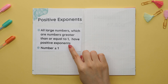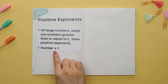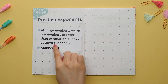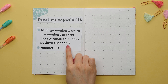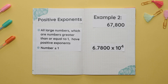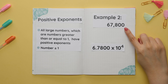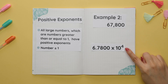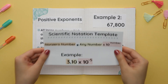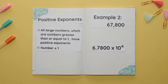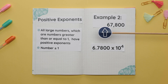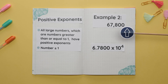All large numbers, which are numbers greater than or equal to one, will have positive exponents when you are converting them to scientific notation. For example two, we'll convert this number from standard notation to scientific notation. Again we will use our general template. We would first find the decimal place. For numbers greater than or equal to one, the decimal place is always after the entire number on the far right.